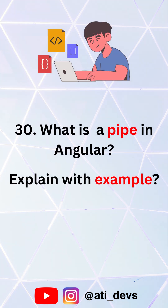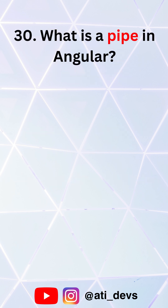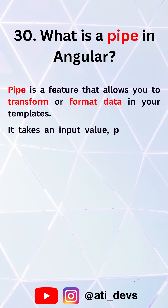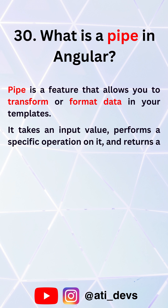What is a pipe in Angular? Explain with example. A pipe is a feature that allows you to transform or format data in your templates. It takes an input value, performs a specific operation on it, and returns a transformed output.